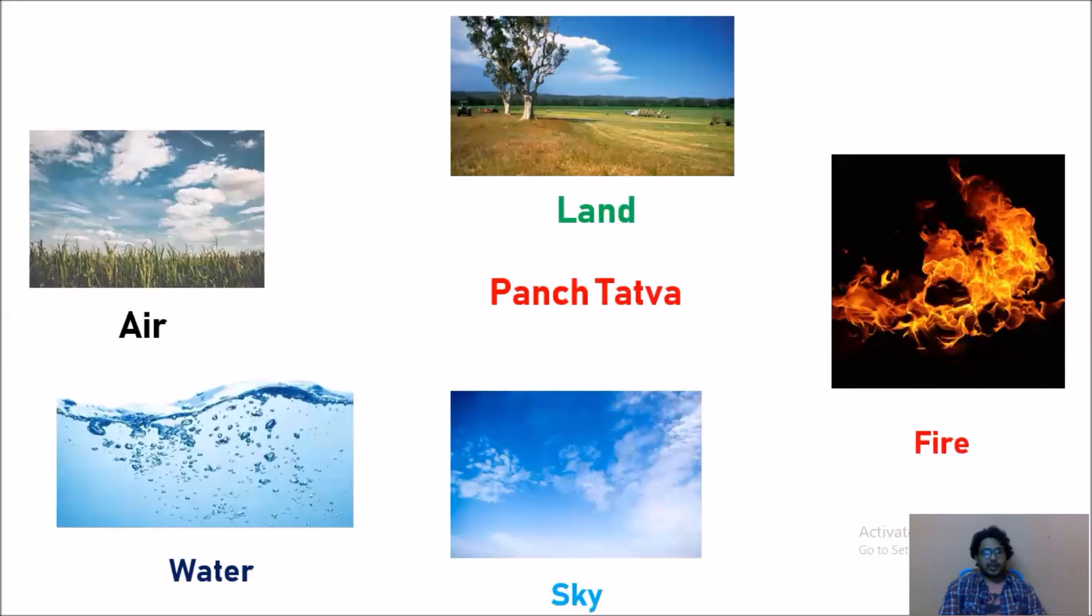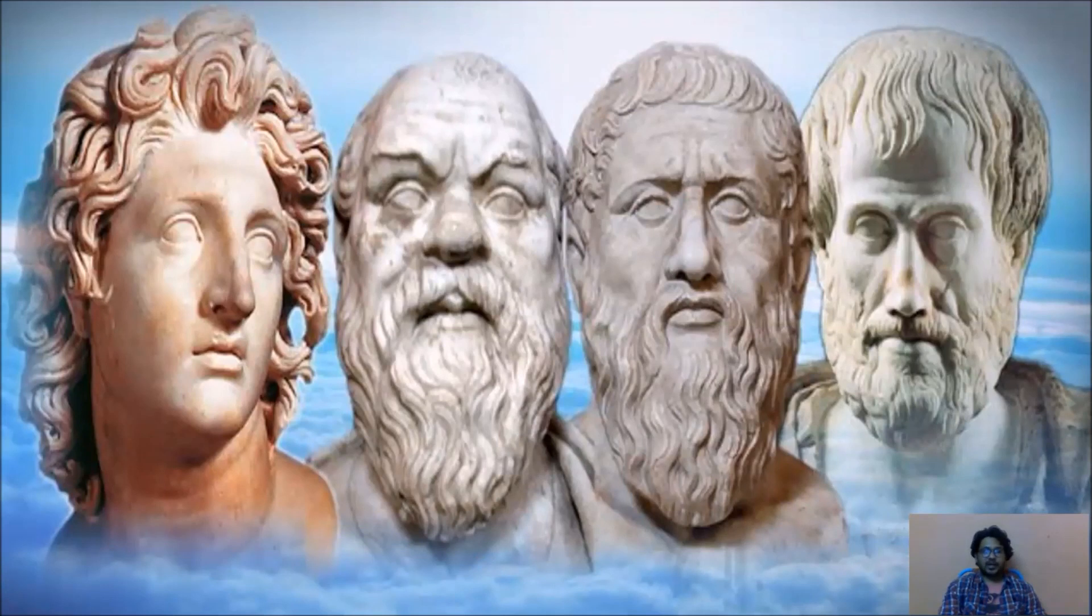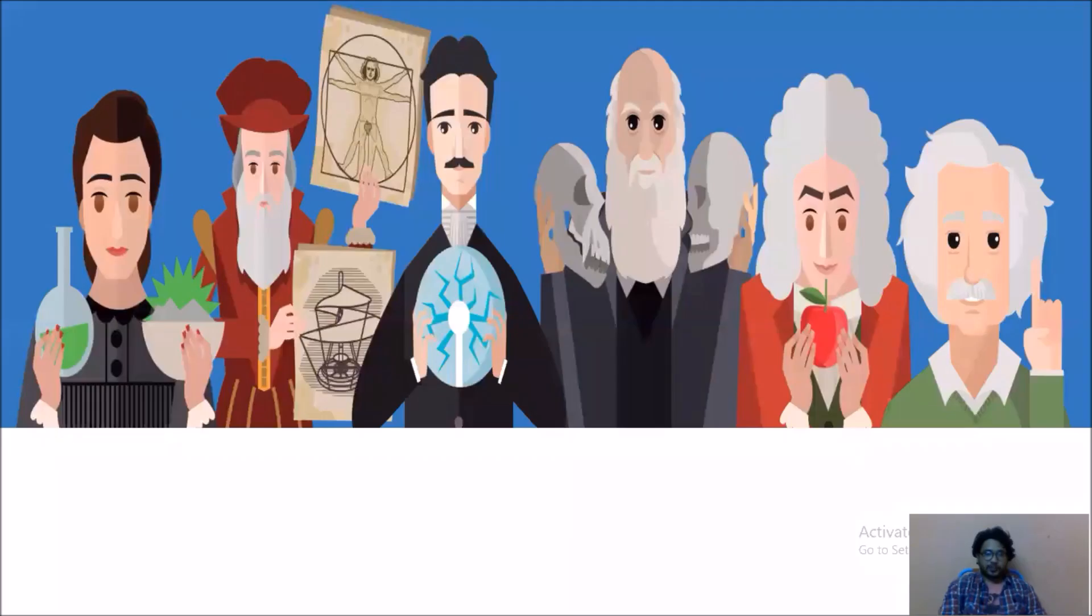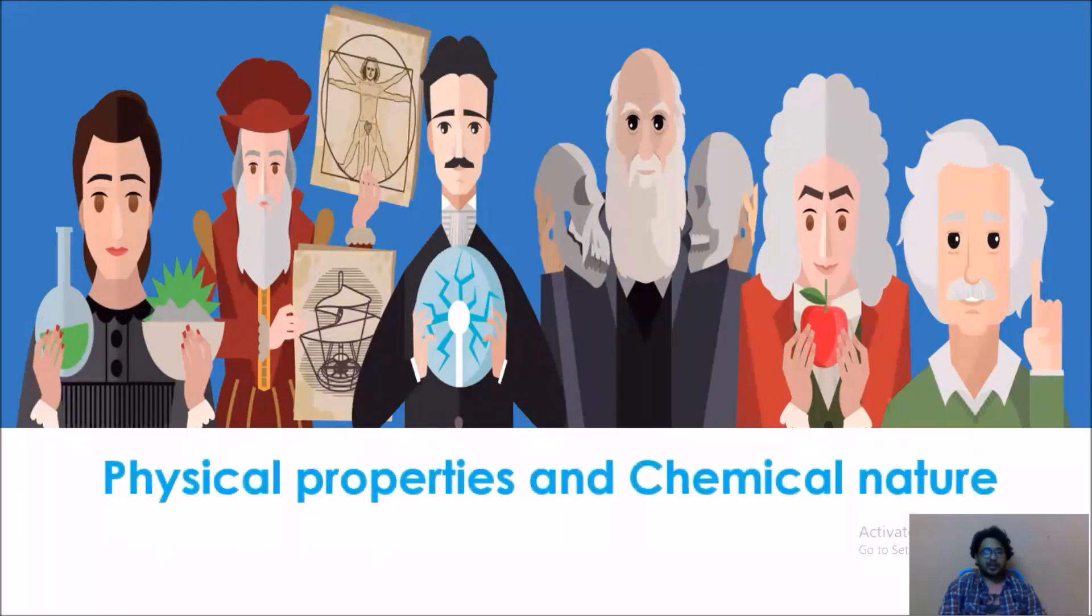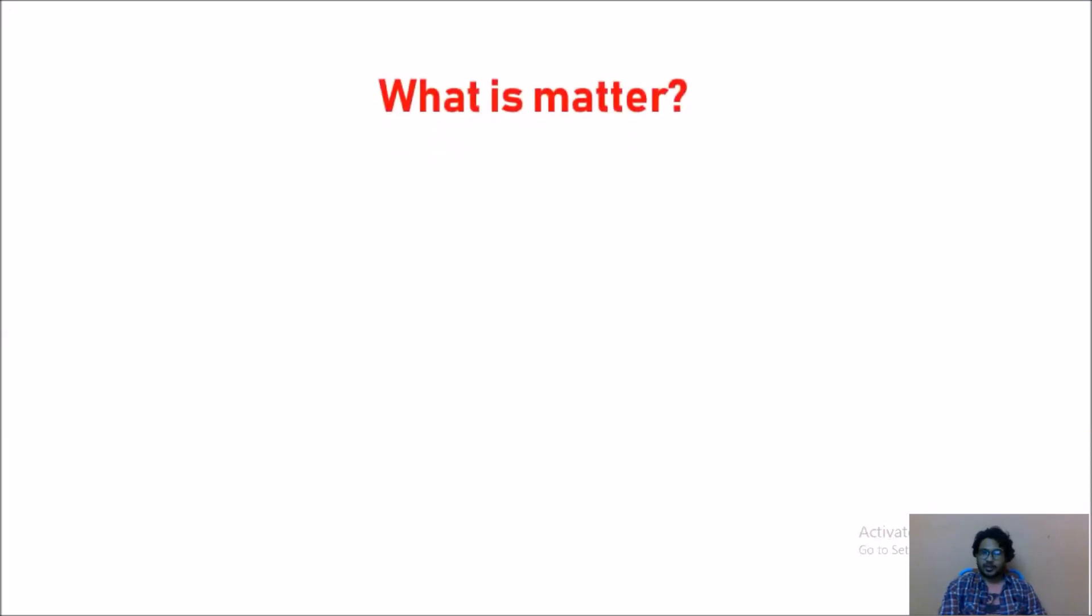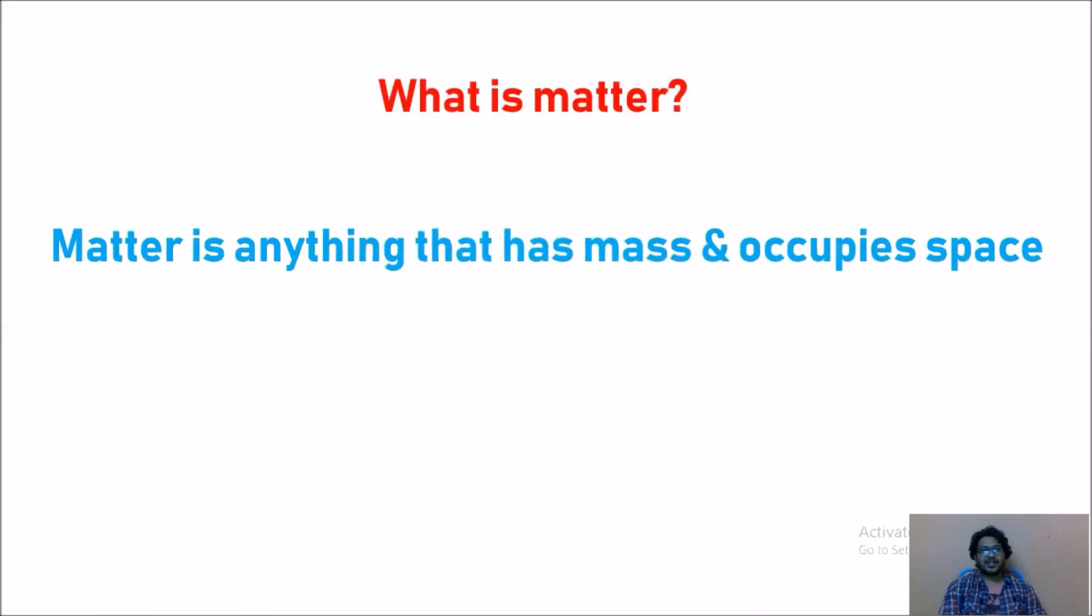According to them everything living or non-living was made up of these five basic elements. Ancient Greek philosophers had arrived at a similar classification of matter. Modern day scientists have evolved two types of classification of matter based on their physical properties and chemical nature. In this chapter we shall learn about matter based on its physical properties. Chemical aspects of matter will be taken up in subsequent chapters.